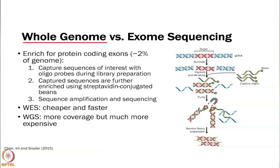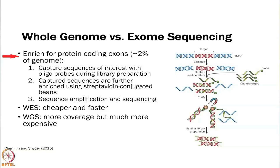Whole genome sequencing means you are taking everything in the genome and sequencing all of it. Depending on the species — if you are working with humans, that is an enormous amount of sequence. If you do not care about intergenic or intronic regions and just care about protein coding genes or exons, then you just want to look at the exome. You can capture exome sequences using oligo probes that match to exon sequences, pulling out and enriching for exon sequences during library prep, essentially getting rid of everything intergenic.